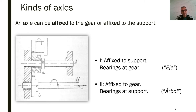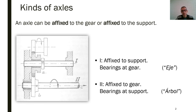The first kind of axle is affixed to the support — it's number one in the figure. You can see that the axle is tightly put together to the support, so the gear itself has bearings to rotate around the axle. The second kind of axle, numbered two in the figure, is actually attached to the gear and has bearings to allow motion with respect to the support. Obviously, the second kind of axle is the only one able to transmit rotational or torsional power through itself.